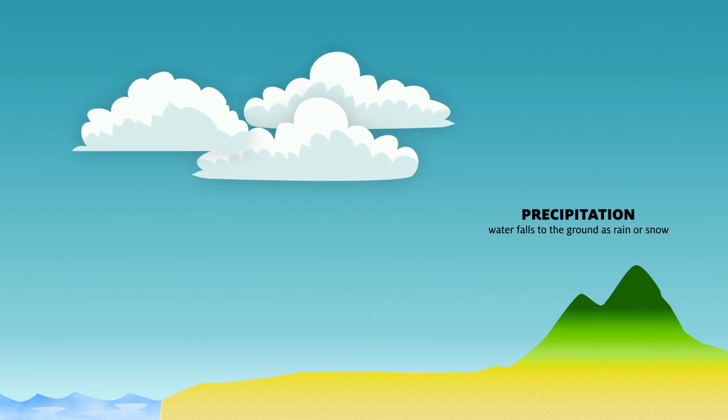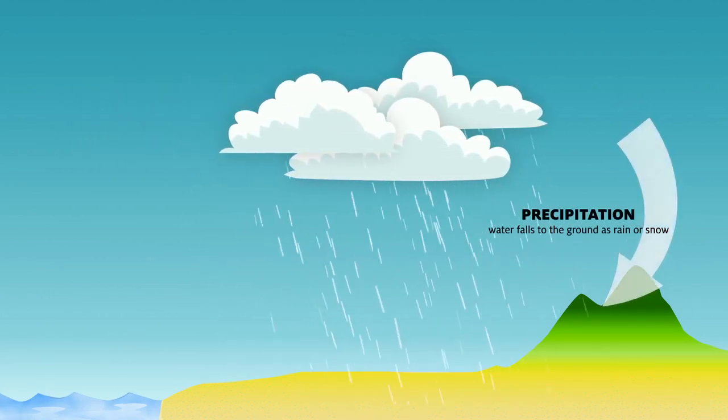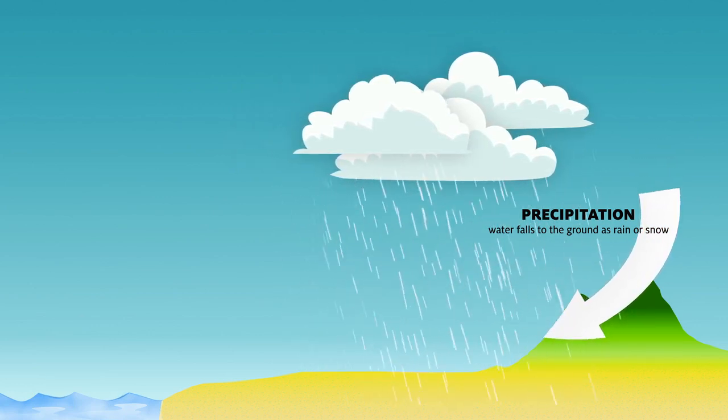Let's start our water cycle with precipitation. That's when water comes out of the air from clouds and falls down to the ground in the form of rain or snow.